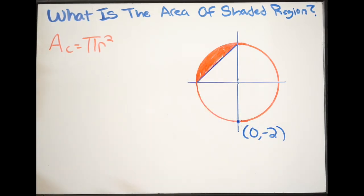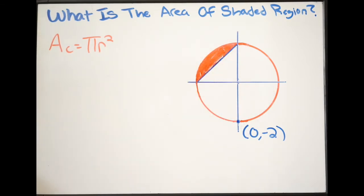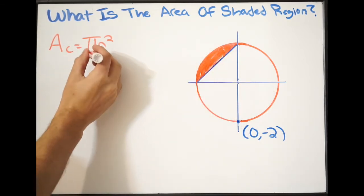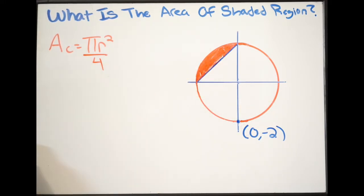So rather than get the entire area of the circle, I just want this part here. So I'm simply just going to divide this by 4, because we have 4 quadrants, so if I want just 1 quadrant, divide it by 4.